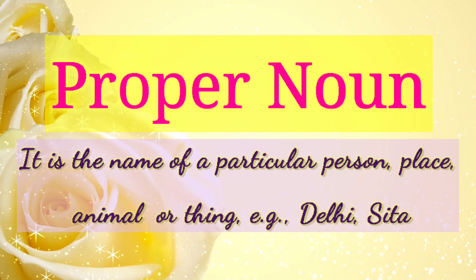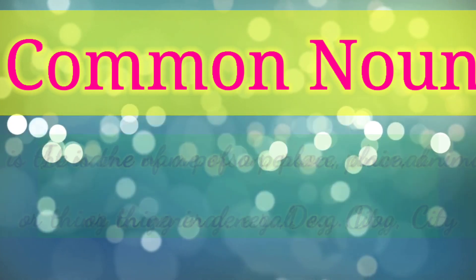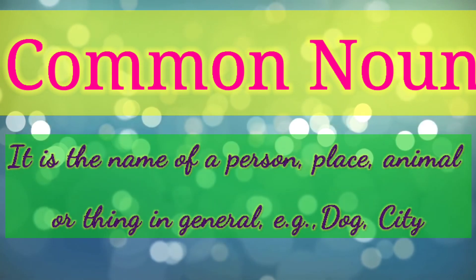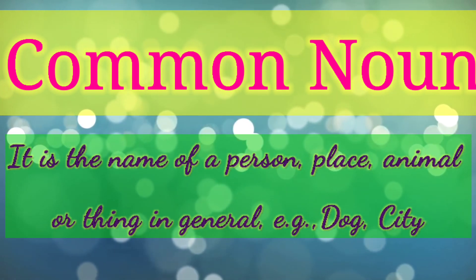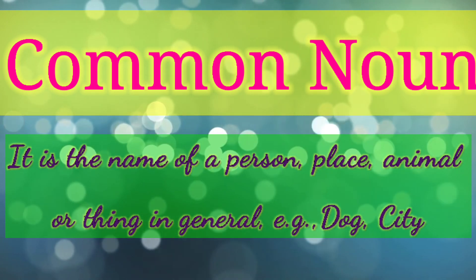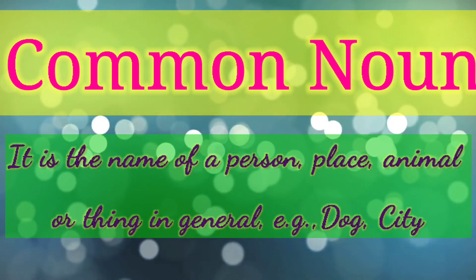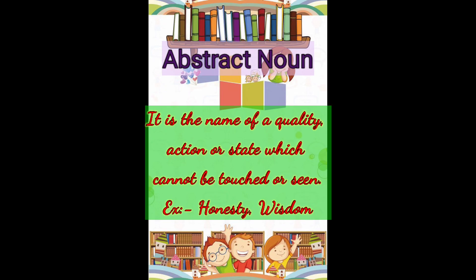These are the particular names for place and person. Common noun — it is the name of a person, place, animal or thing in general. Dog and city are the two examples for common nouns. Next is abstract noun — it is the name of a quality, action or state which cannot be touched or seen. Some examples are Honesty and Wisdom.